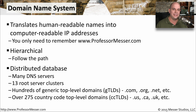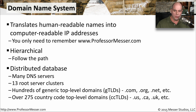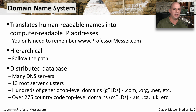There are over 275 country code top-level domains, things like .us for the United States, .ca for Canada, .uk for the United Kingdom, and many others as well.